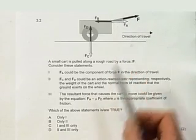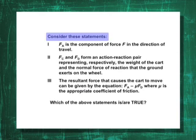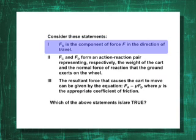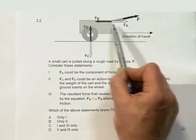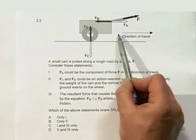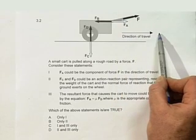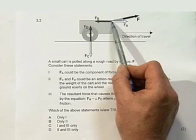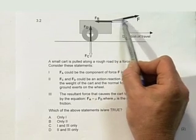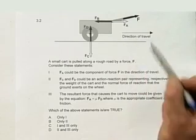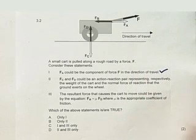Consider the following statements. If Fa could be the component of the force F in the direction of travel, well certainly that is a force in the same direction. If Fa is the same direction as the direction of travel, then yes, it could quite conceivably, because it is from where the handle is attached and we know that there's a force in the handle. So yes, that could be correct—well, that is correct, it could be the component of F.